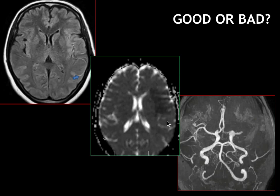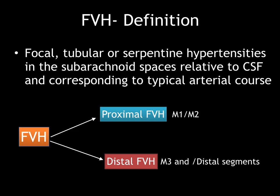So what is FLAIR vascular hyperintensity? It is defined as focal tubular serpentine hyperintensities in the subarachnoid space relative to CSF, corresponding to typical arterial courses. It can be either proximal FVH or distal FVH. Proximal FVH includes M1 and M2 segments, while distal FVH includes M3 and more distal segments.